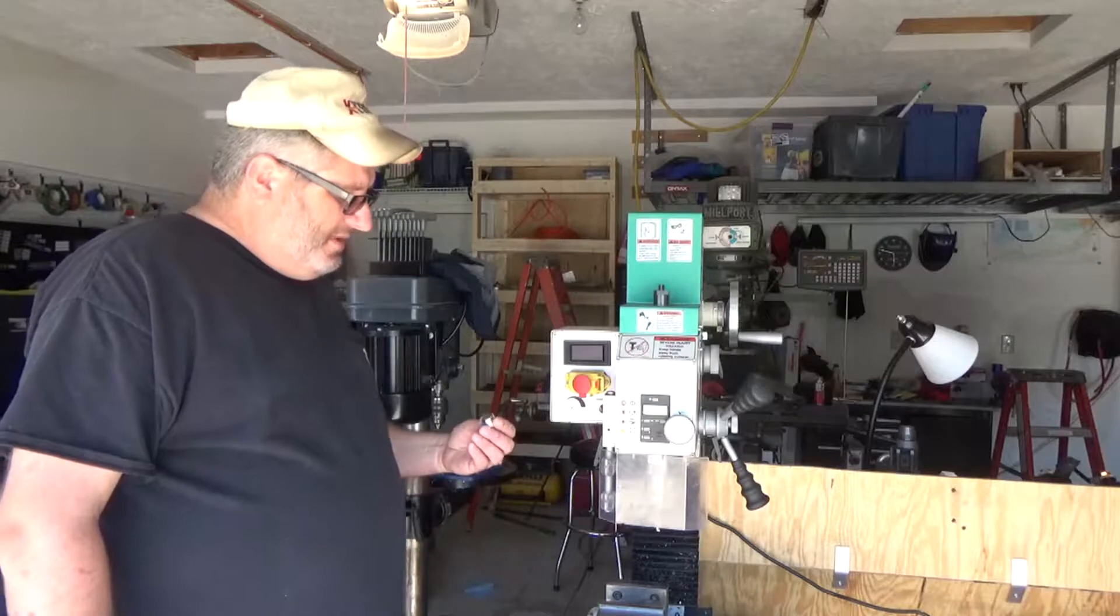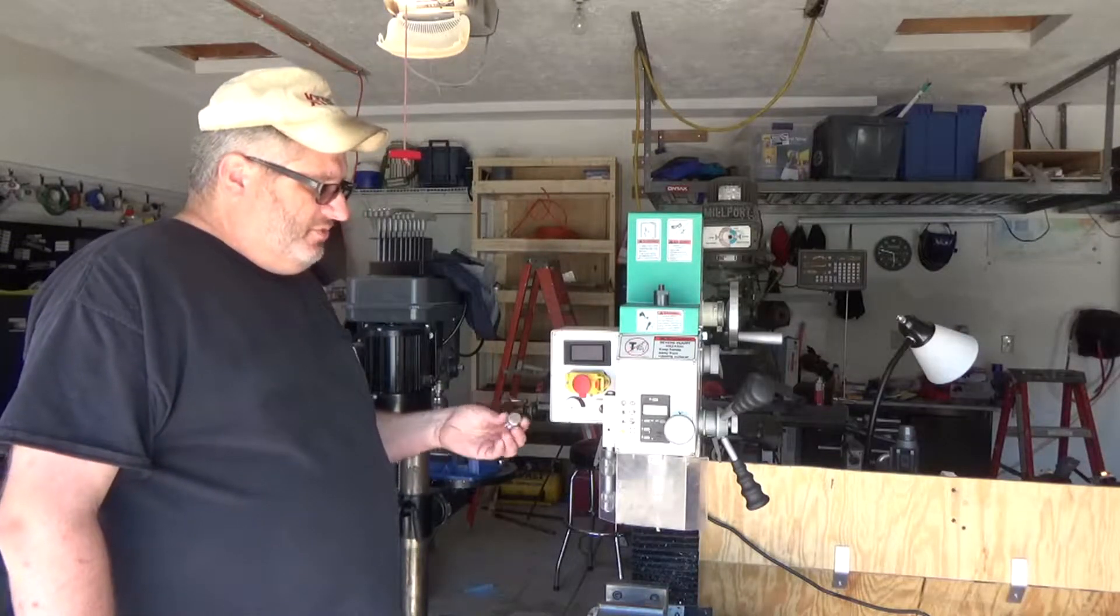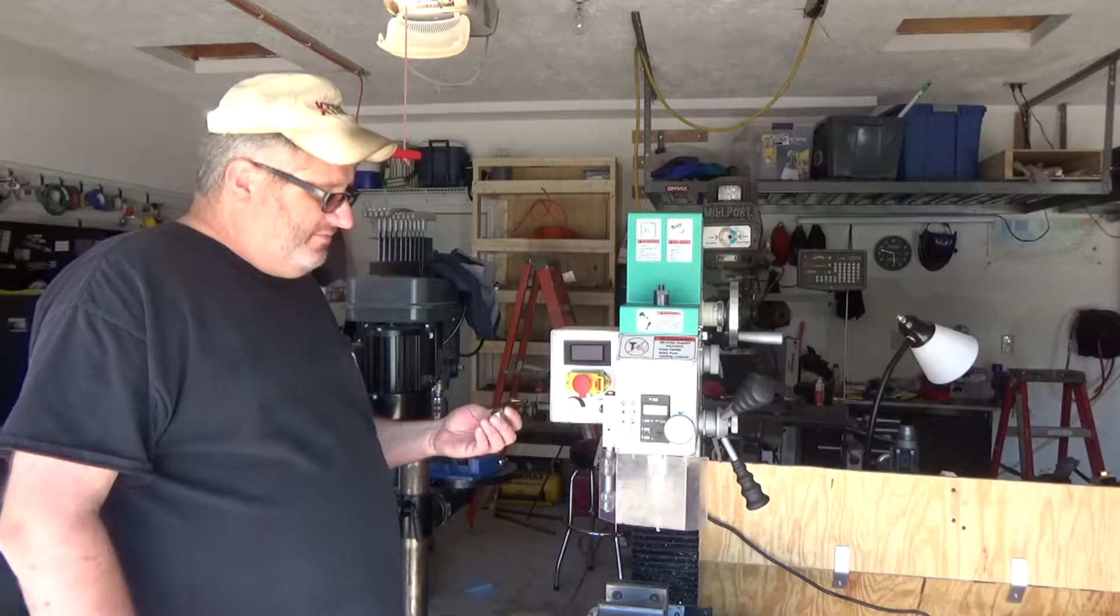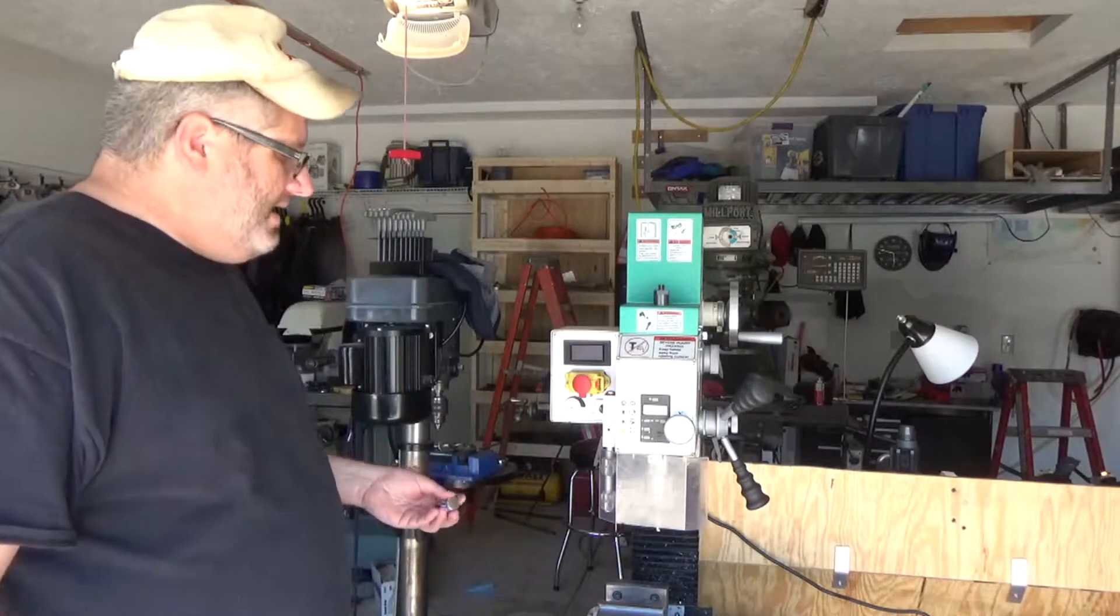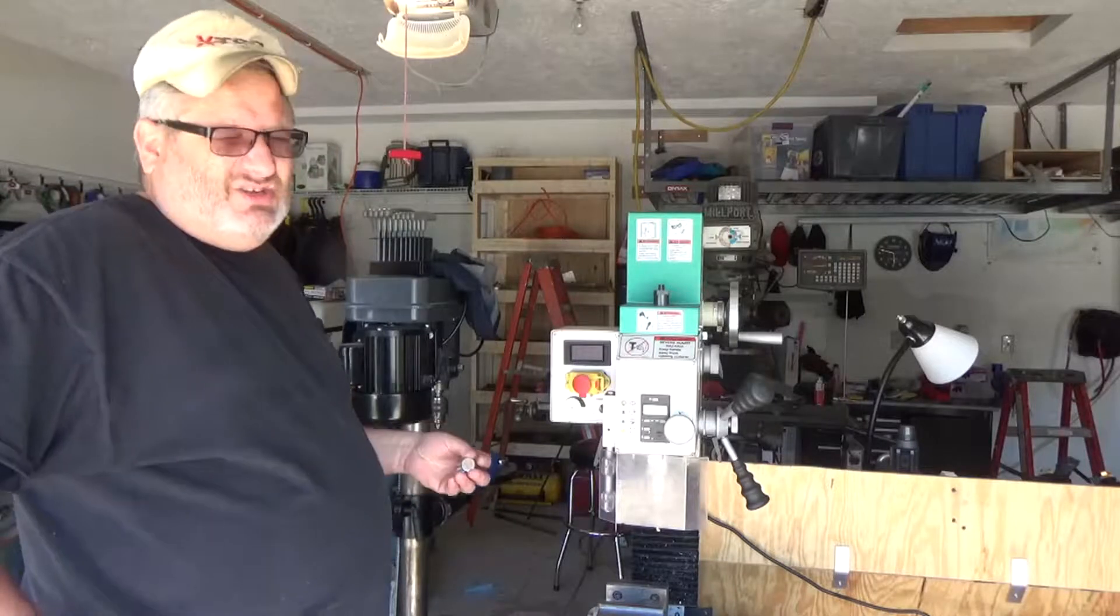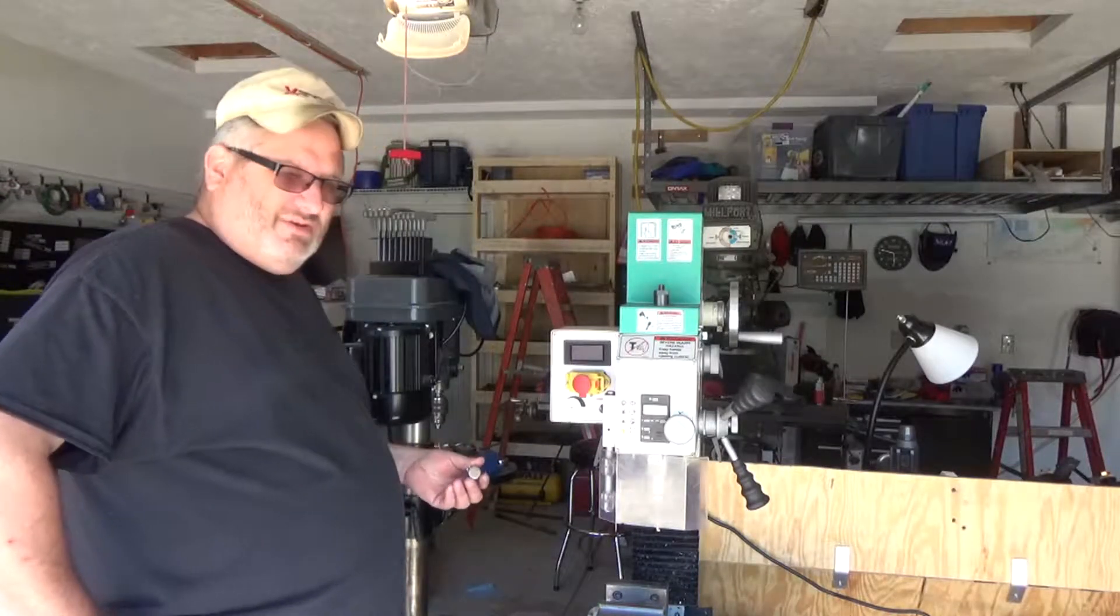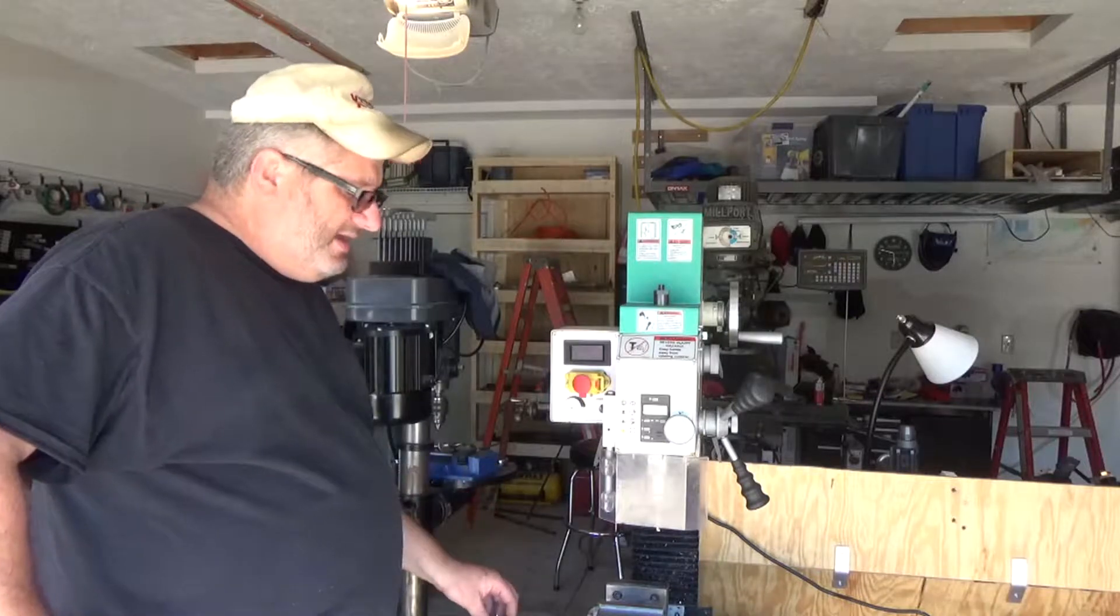So in the description I'll put down the part number from Grizzly you can get it. I also found the same, once I get the part over it, the number is off here and I'll put that in the description. I found it on eBay. You can get it cheaper on eBay, free shipping. It's about the same cost but Grizzly charged $9.99 for shipping.